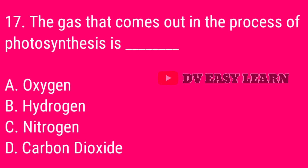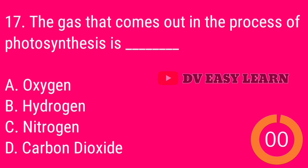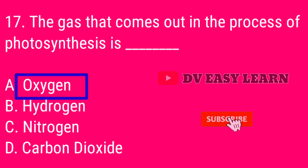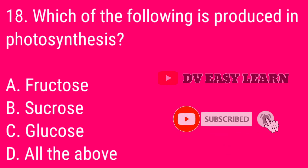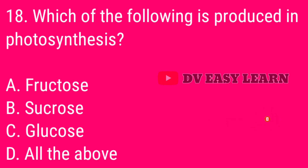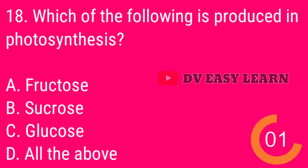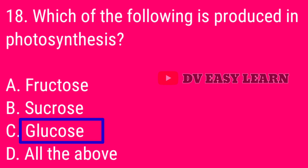Question 17. The gas that comes out in the process of photosynthesis is oxygen. Question 18. Which of the following is produced in photosynthesis? Glucose.